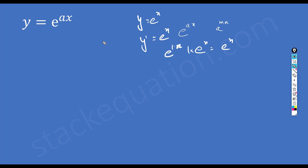The point I'm trying to make is that the first derivative of e to the power ax is equal to a into e to the power ax. The form we studied in high school is a corollary of that, where a is equal to 1.